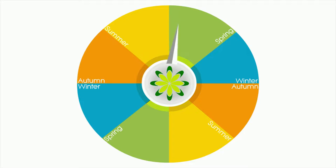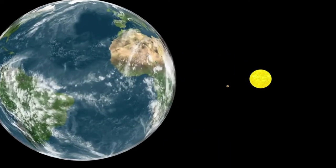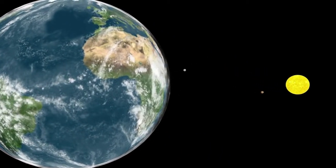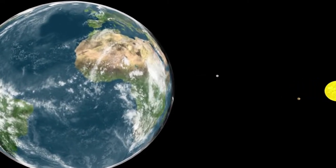Seasons are caused by the Earth's annual movement around the sun and the tilt of its axis in relation to the plane of revolution. Seasons in temperate and polar regions are defined by differences in the amount of sunshine that reaches the Earth's surface.